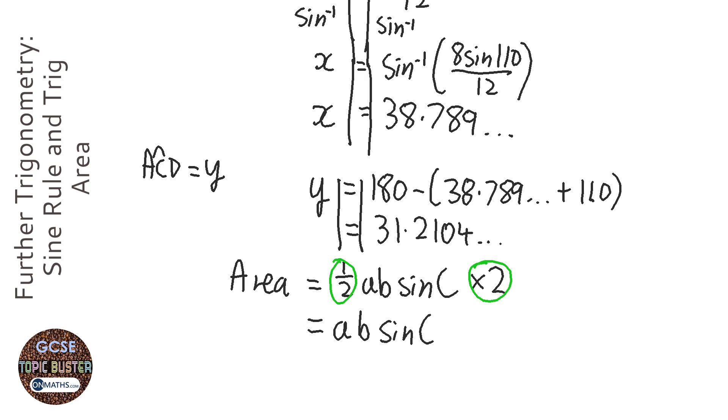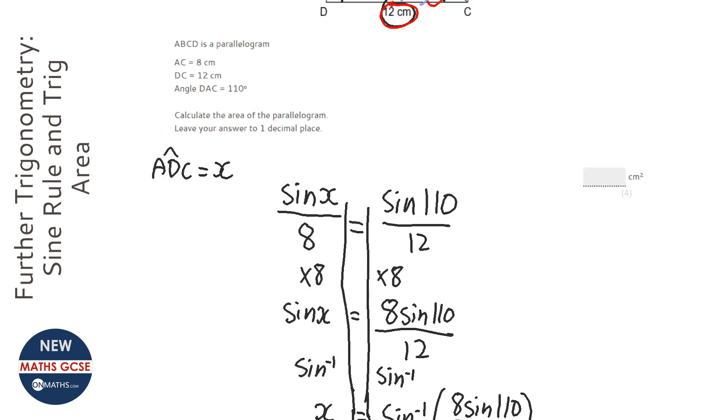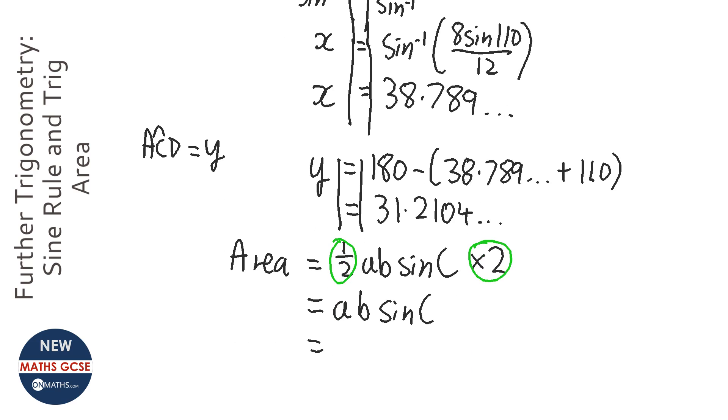So it's just going to equal AB sine C. I've kept that number in my calculator, so I can use it with A and B. A and B are going to be 8 and 12. So it's going to be 8 times 12 times sine 31.2104 blah blah blah.